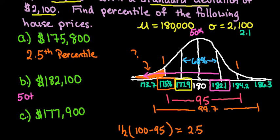We know that there is 68% between 177,900 and 182,100. So half of that would be in this area right here. So 34% of the area falls between these two values. So I would take 50 plus 34, and that gives me the 84th percentile.